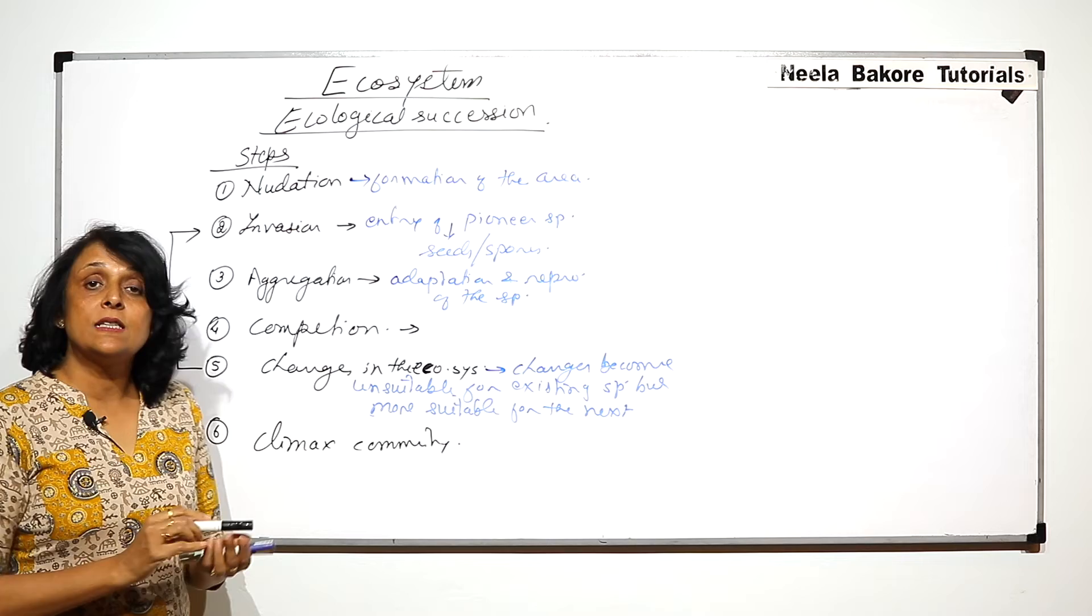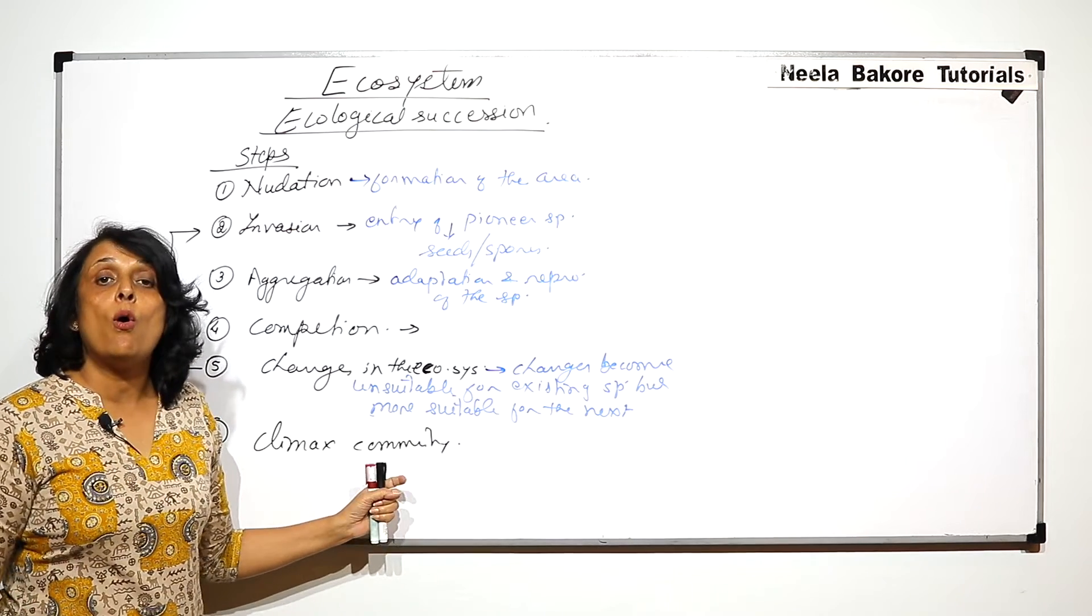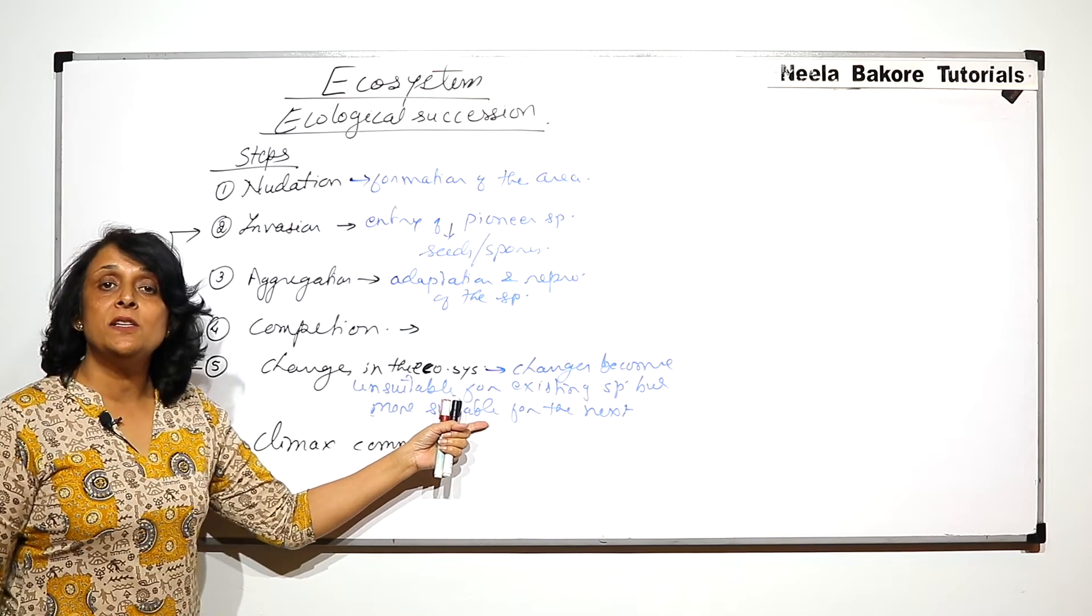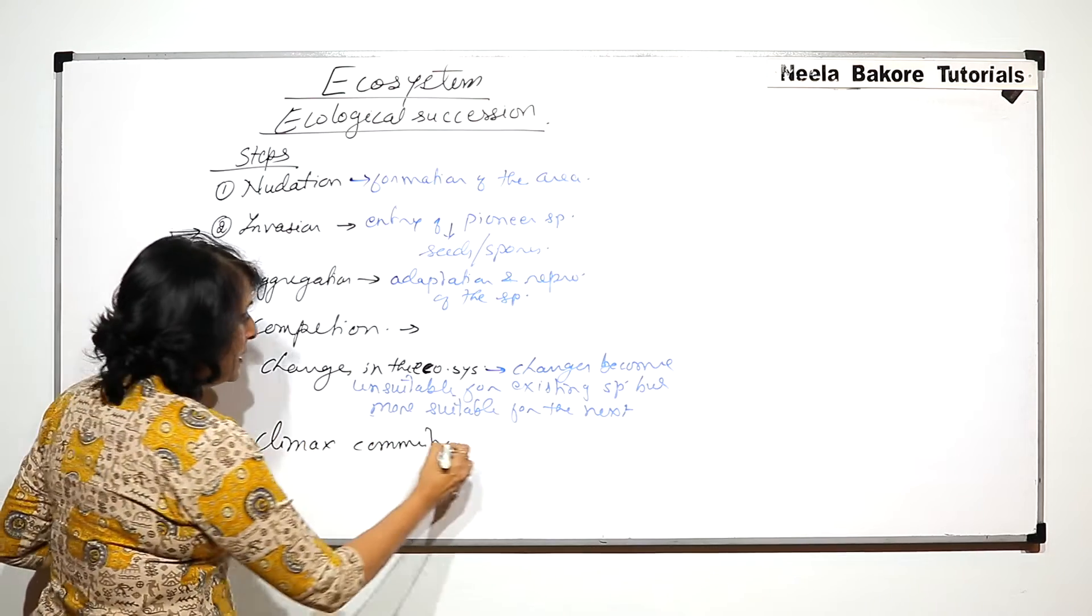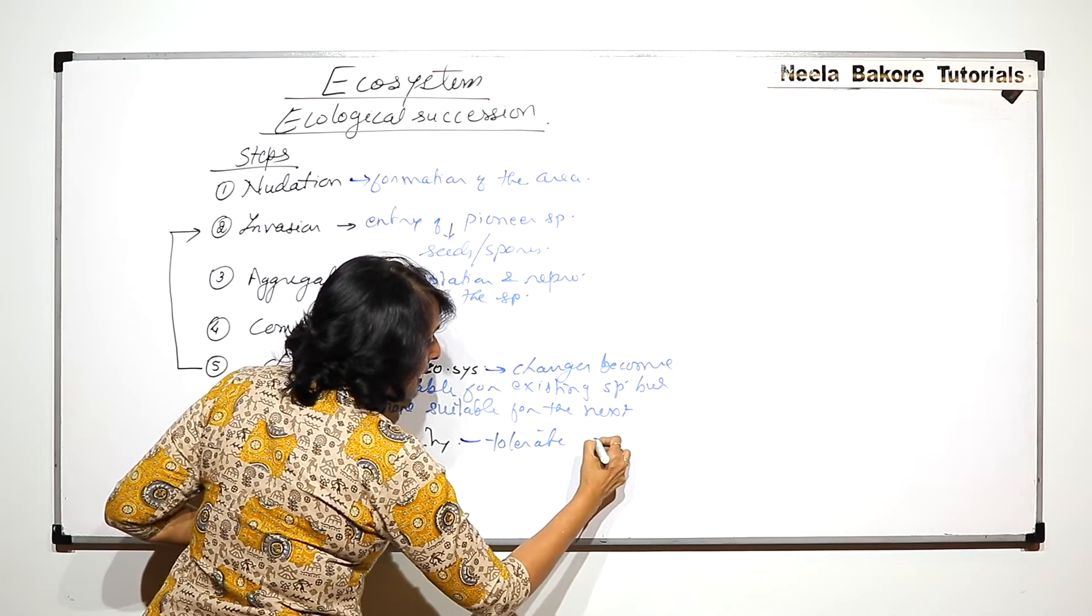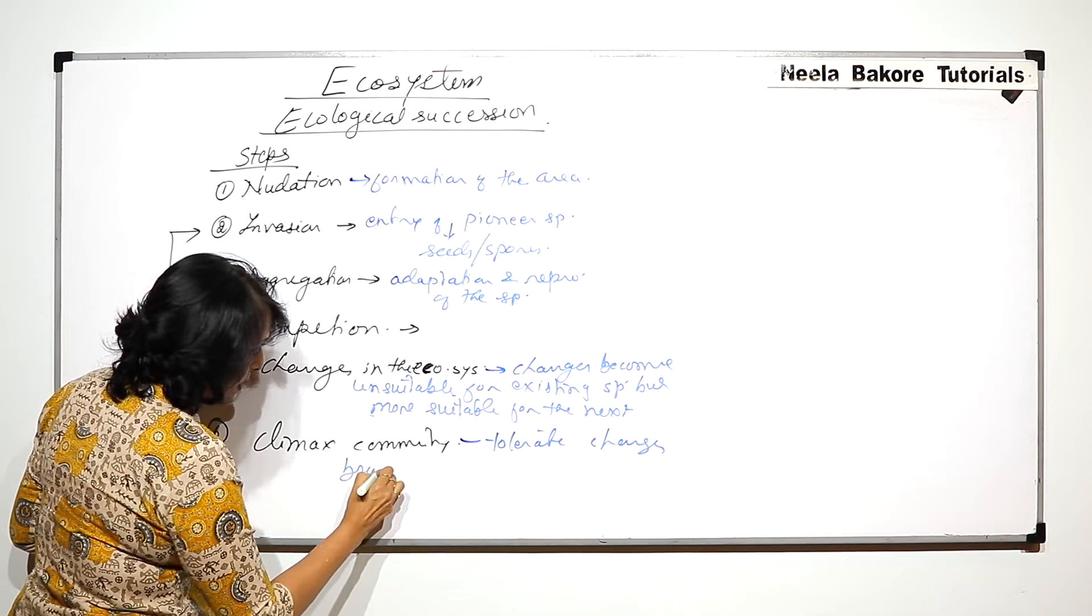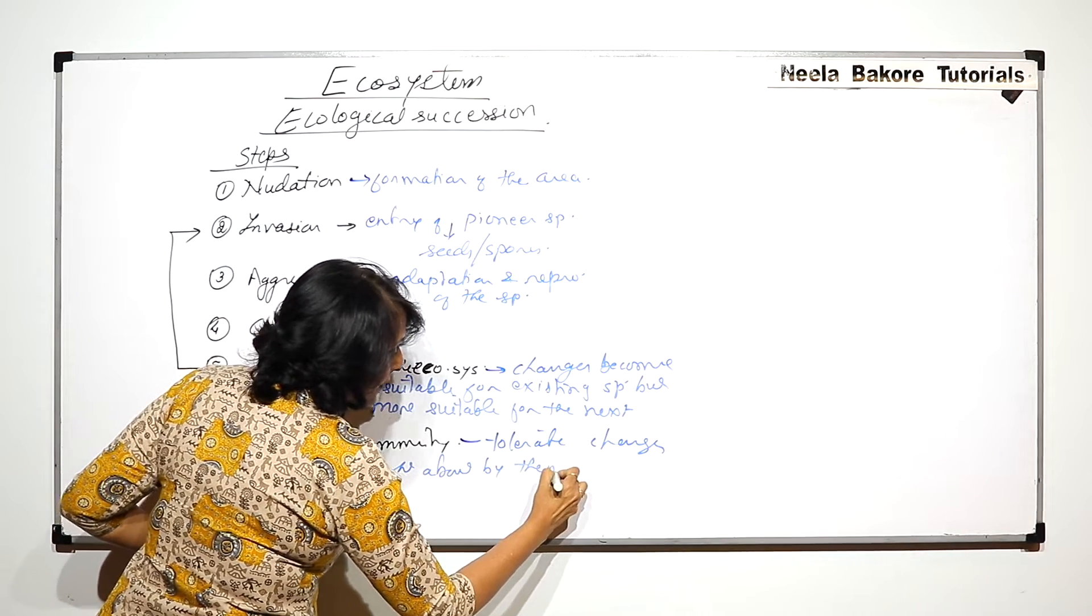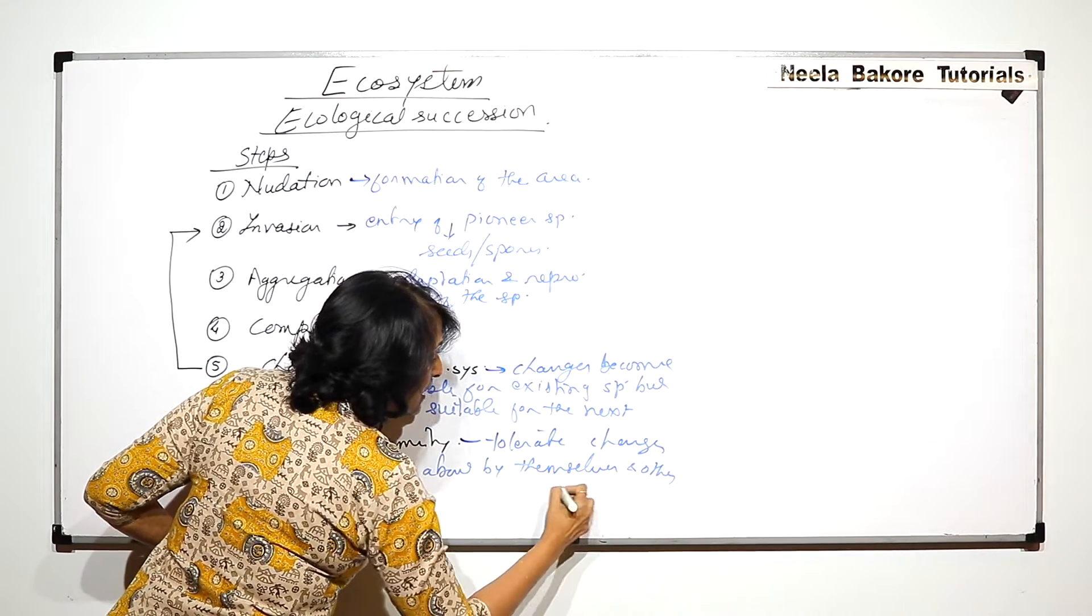Climax community is the one which is able to tolerate, withstand all the changes brought about by the other species, the ones which previously existed and by themselves. Tolerate changes brought about by themselves and other species.